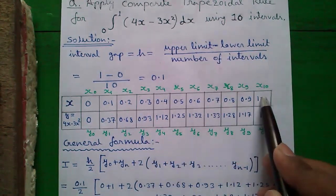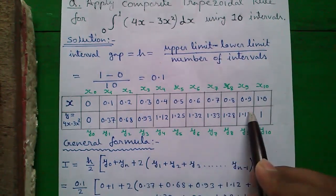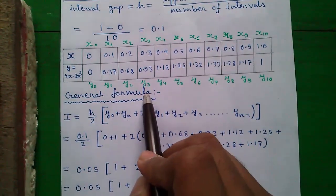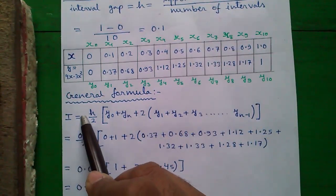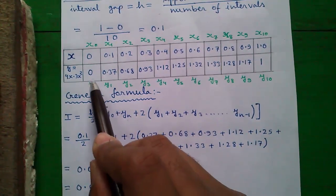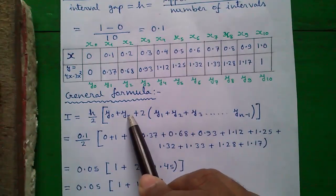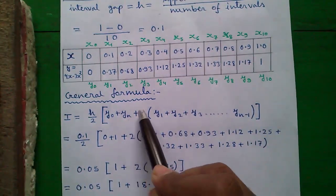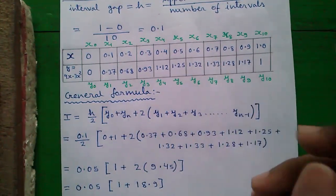Similarly, using any of the calculator you can form the whole table and then proceed to our general formula. I or the integral value equals to h divided by 2 into y0, the first value of y plus yn, the last value of y plus 2 into rest of the values in between.